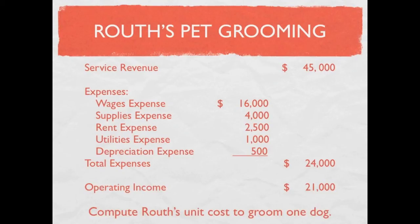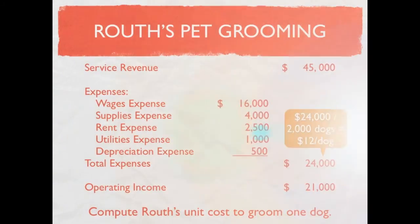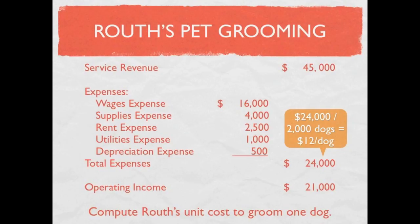We were also asked to compute Ruth's unit cost to groom one dog. Pay close attention to what you're being asked. A lot of times students will read this quickly and think they need to divide operating income — but we're not being asked for operating income per unit. We're being asked for the unit cost to groom one dog. We need to divide our total expenses of $24,000 by the number of dogs we groomed, which is 2,000 dogs. That gives us $12 per dog — that's our cost per dog.